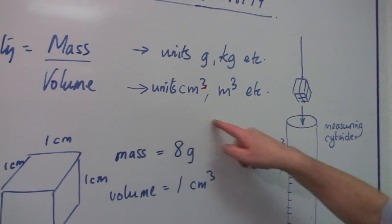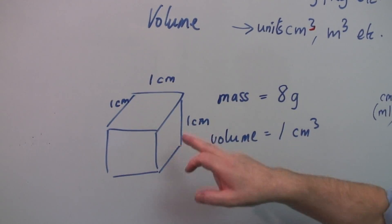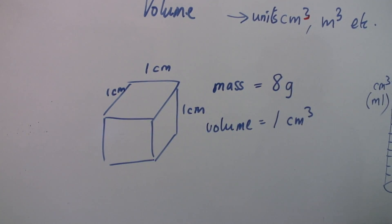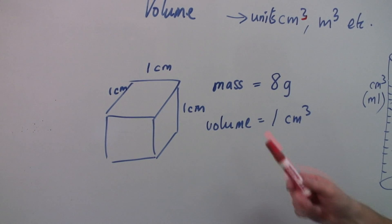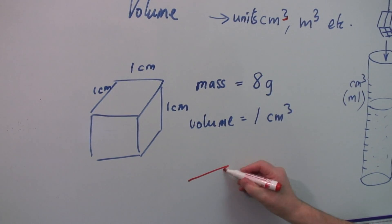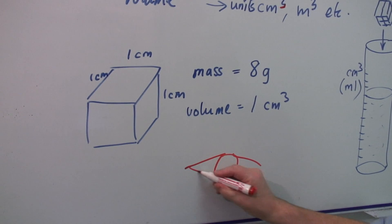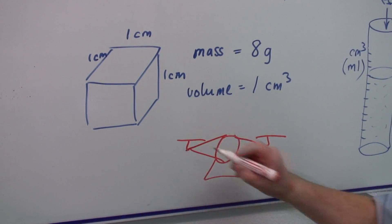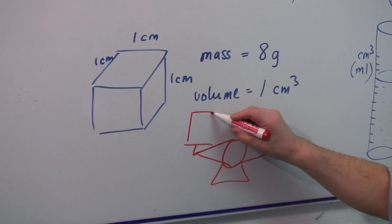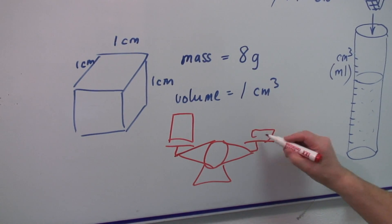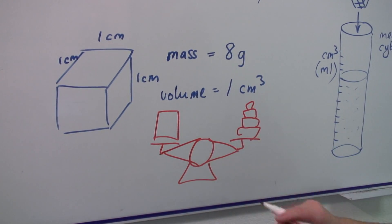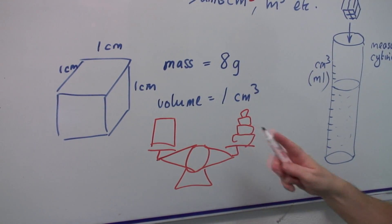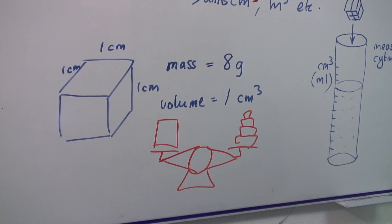Here is an example. We have a cube one centimeter by one centimeter by one centimeter — a piece of cubic material, probably something like steel, iron, or copper. The mass was measured on a balance of this kind, where you have two pans, one on each side, that measures mass. You put your cube on one side and your standard masses on the other side. So this is a mass measuring machine. The mass turned out to be eight grams.